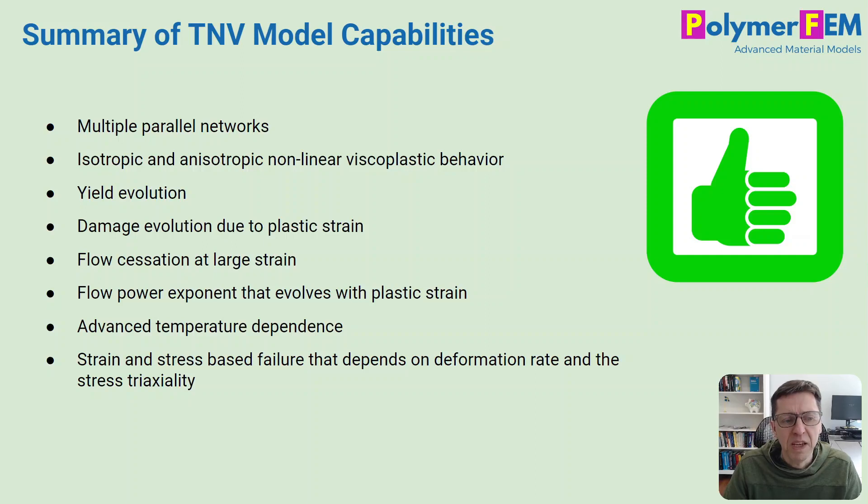So to summarize, the TNV model contains multiple parallel networks. It can be isotropic, it can be anisotropic, it's non-linear viscoplastic, it has yield evolution, it has damage evolution, it can have flow cessation, and the power exponent can be evolving with plastic strain, you can have temperature dependence, and failure. So all of these things that you see in experimental tests can also be captured in this model. So if you haven't tried the TNV model, I do encourage you to try that, and if you have any questions, you can ask them below.